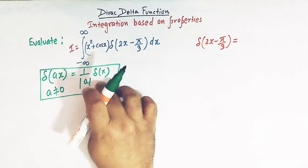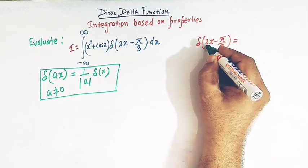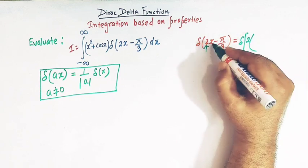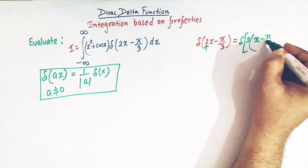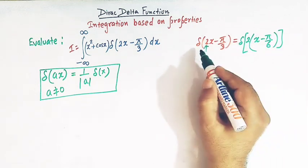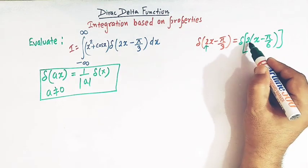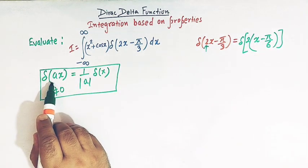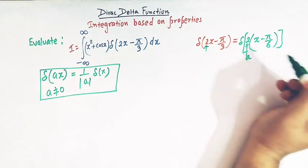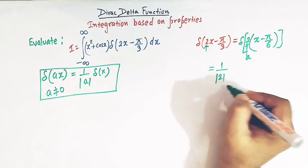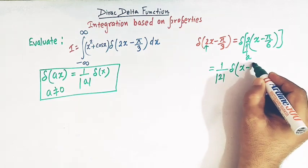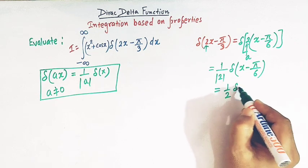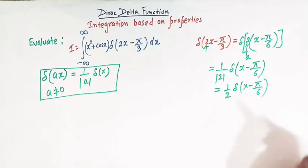We will apply this property to the term delta of 2x minus pi by 3. We take 2 common to write it as delta of 2 times (x minus pi by 6). This form is now similar to delta of ax, where a equals 2. So we write it as 1 over mod of 2 times delta of x minus pi by 6, which simplifies to one-half times delta of x minus pi by 6.